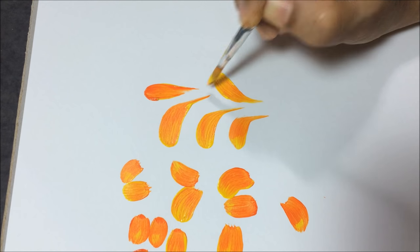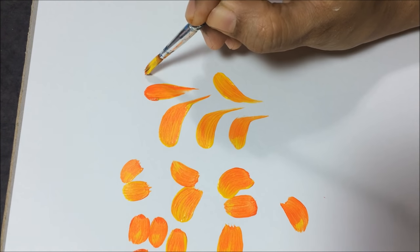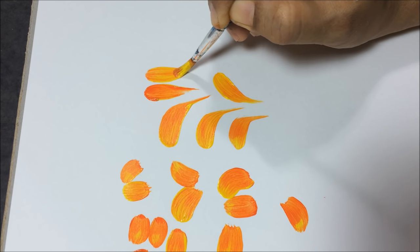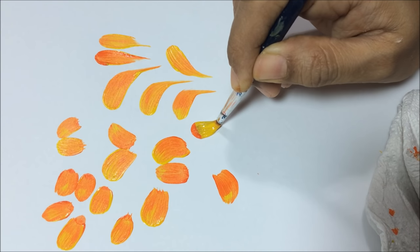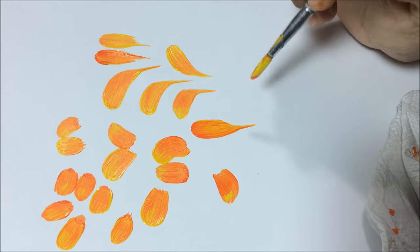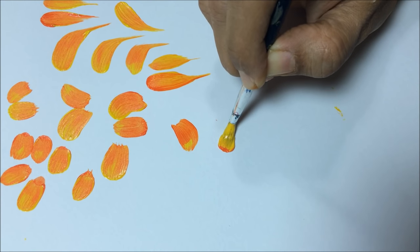Now for the fourth stroke, the straight comma stroke, all the actions are same as curved comma stroke, but only the path of the stroke would be straight rather than curved.